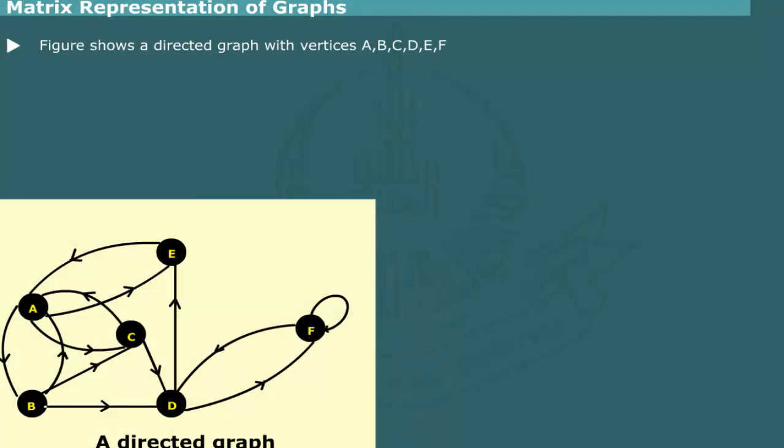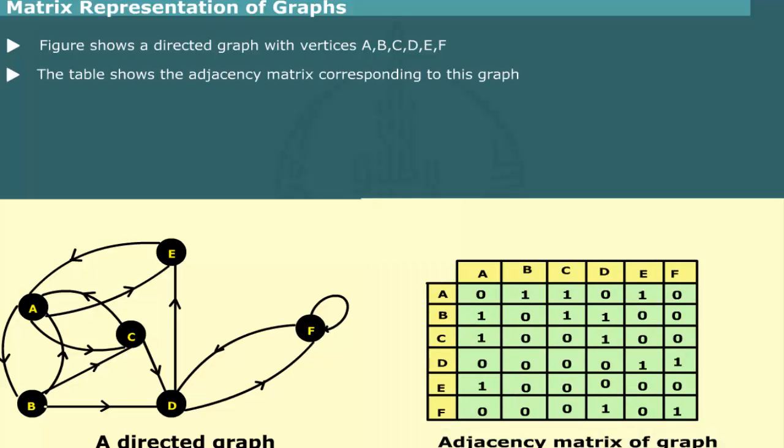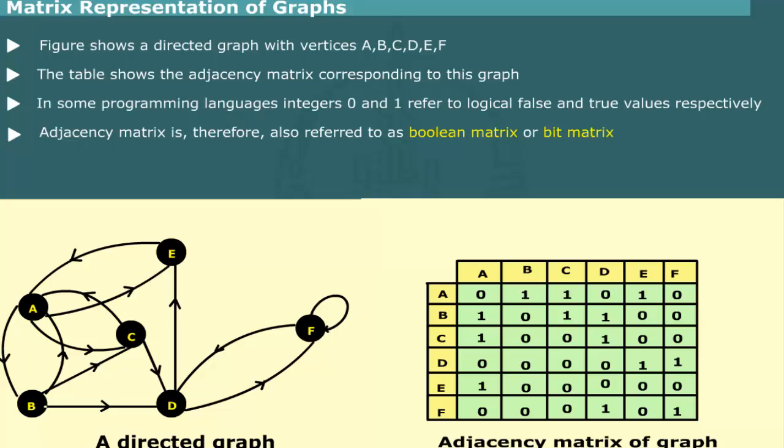Consider the graph shown in figure. It is a directed graph with vertices labeled A, B, C, D, E, F. This figure shows the matrix corresponding to this graph. Since in some programming languages such as C, C++, integers 0 and 1 refer to logical false and true values, the adjacency matrix is sometimes referred to as Boolean matrix or bit matrix.